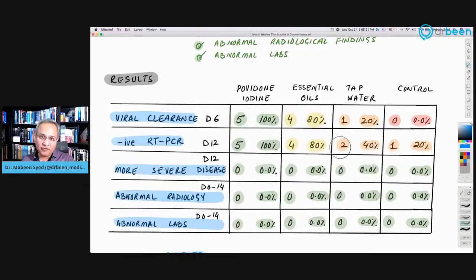So early viral clearance with iodine within six days, virus was cleared. And again, small study, but it shows you that if they were given nothing, then the virus was not cleared. Or if they were given water, then the virus was not cleared. It is only when they gave iodine or essential oils, then the virus was cleared. Then negative PCR at day 12. All five who were getting iodine, they were negative by day 12. Four who were taking essential oils, they were negative by day 12, 80%.